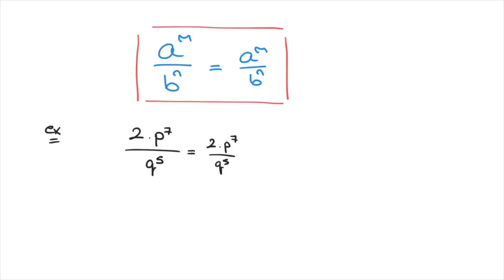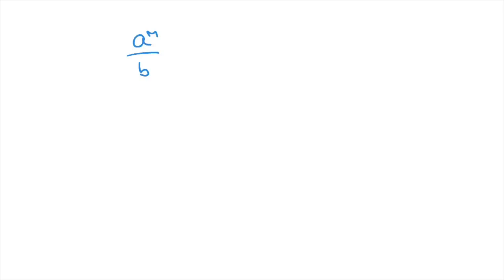There is, nevertheless, one exception. If the exponents m and n are equal, then a raised to the power of m over b raised to the power of m — different bases but both raised to the same power m — equals a over b in parentheses, all raised to the power of m.